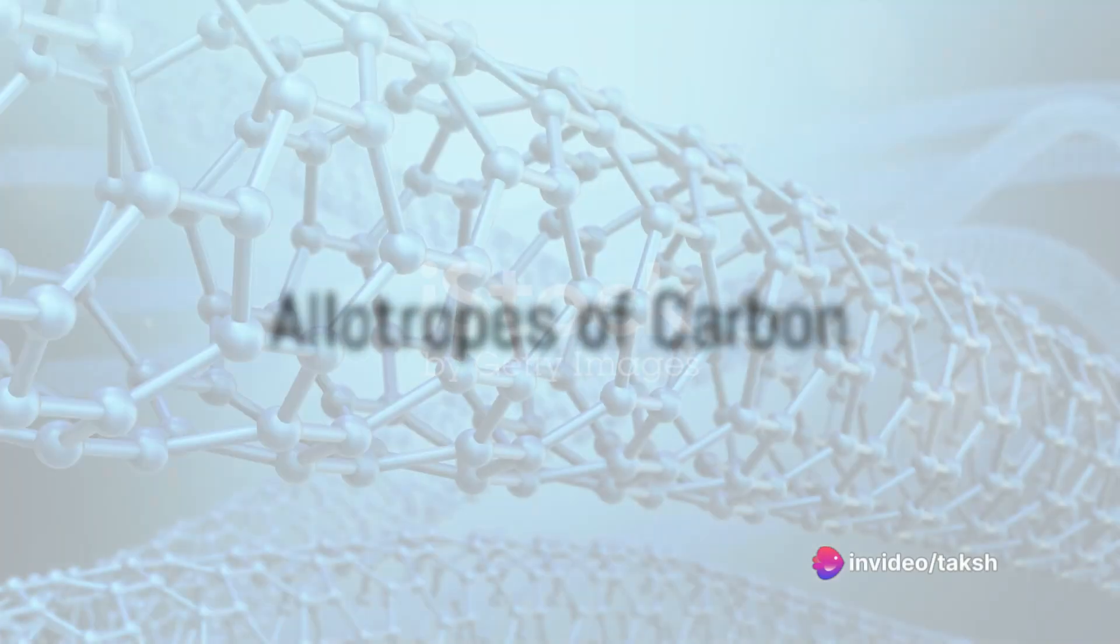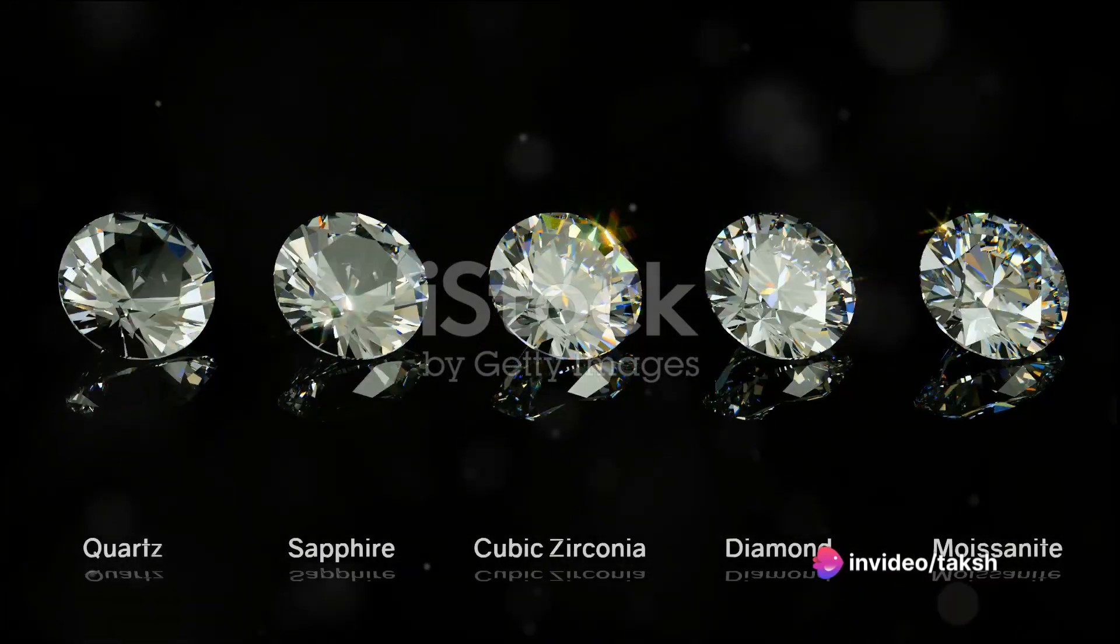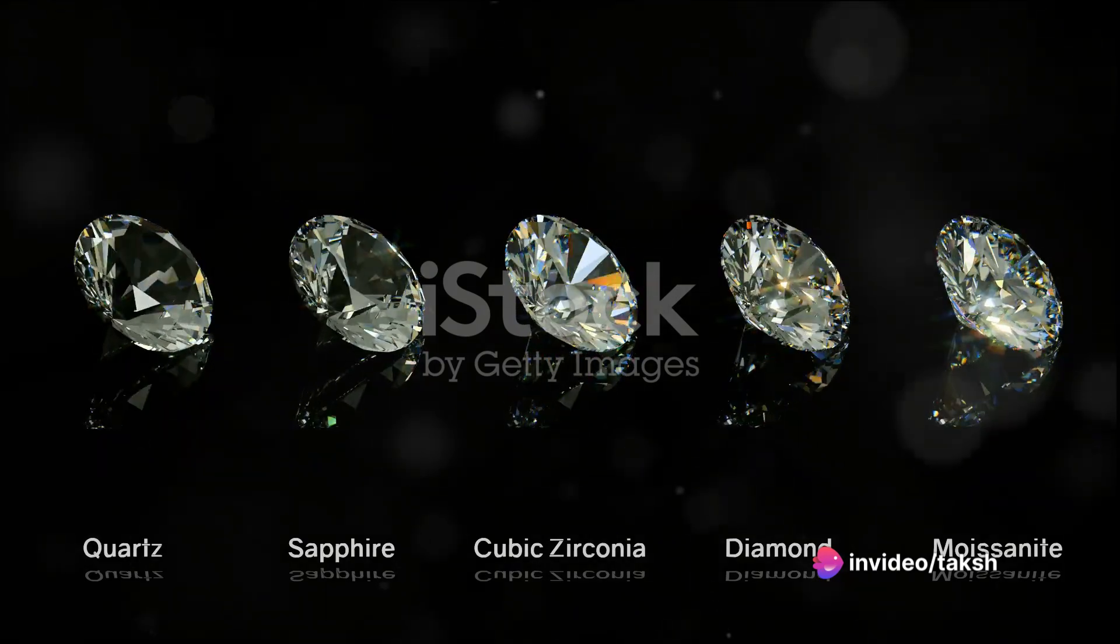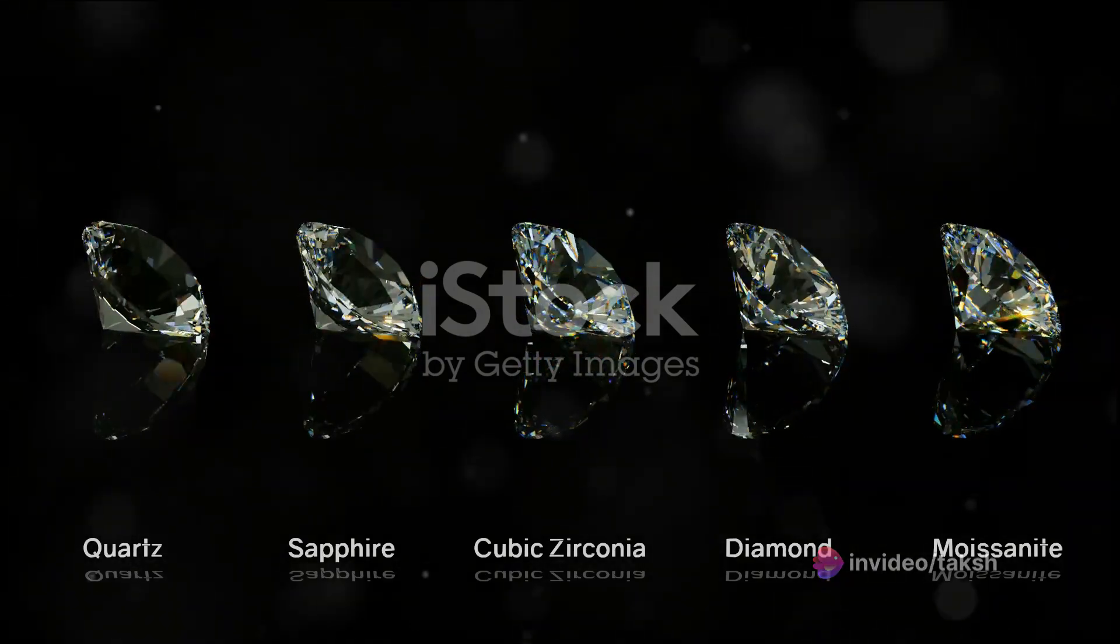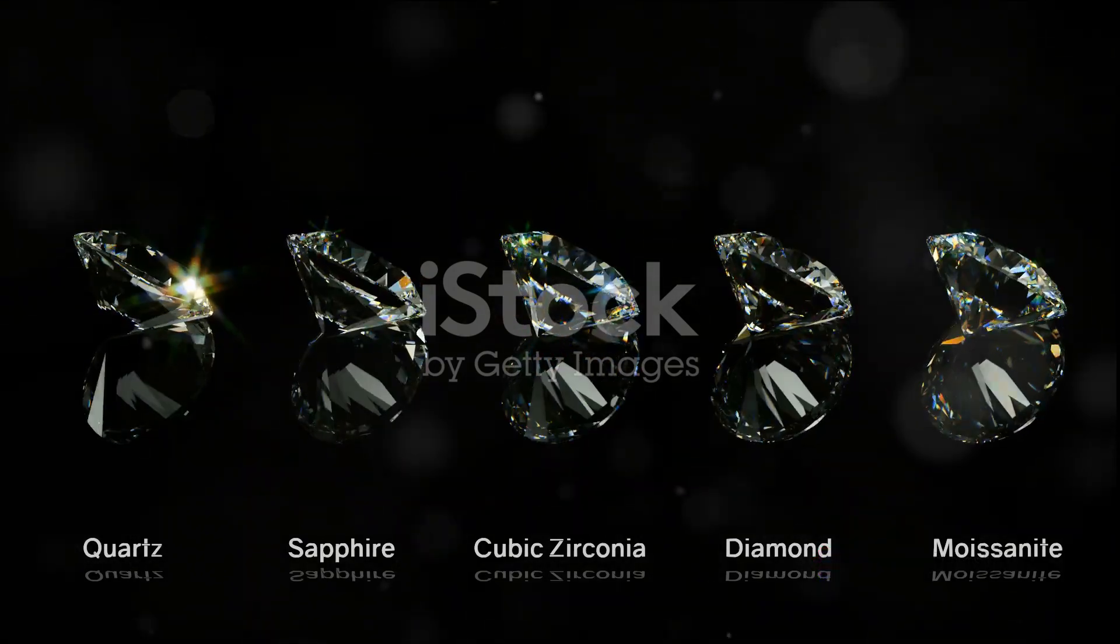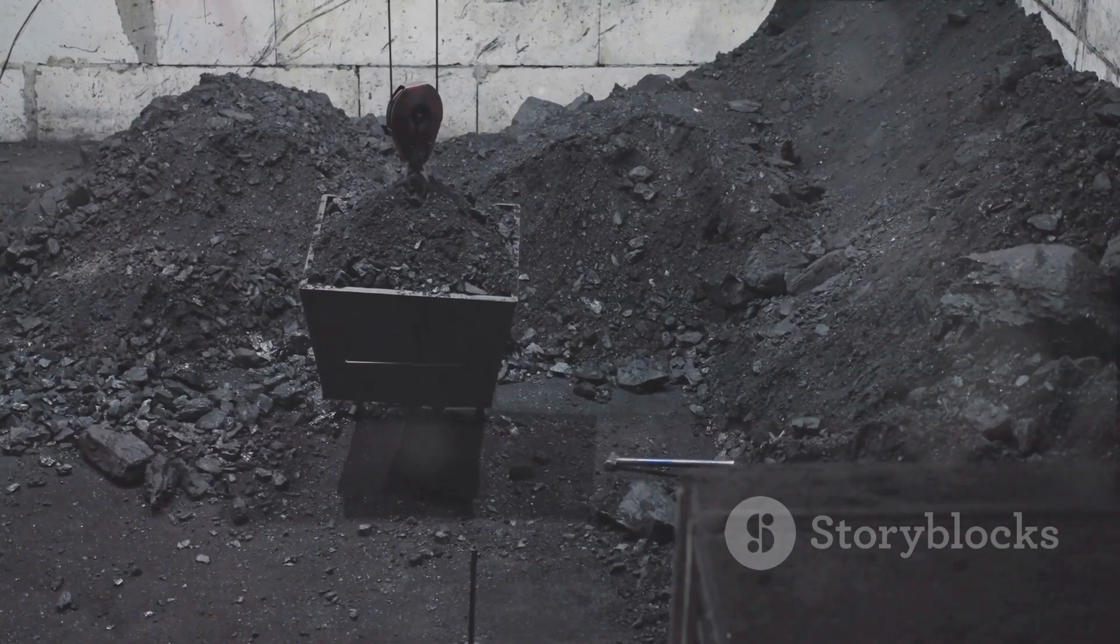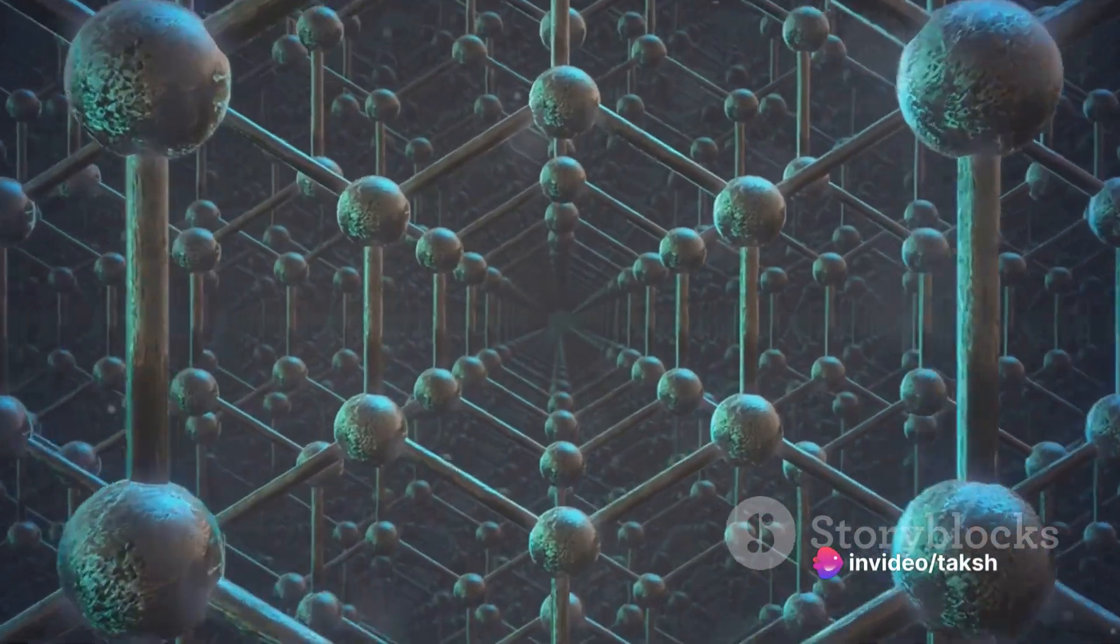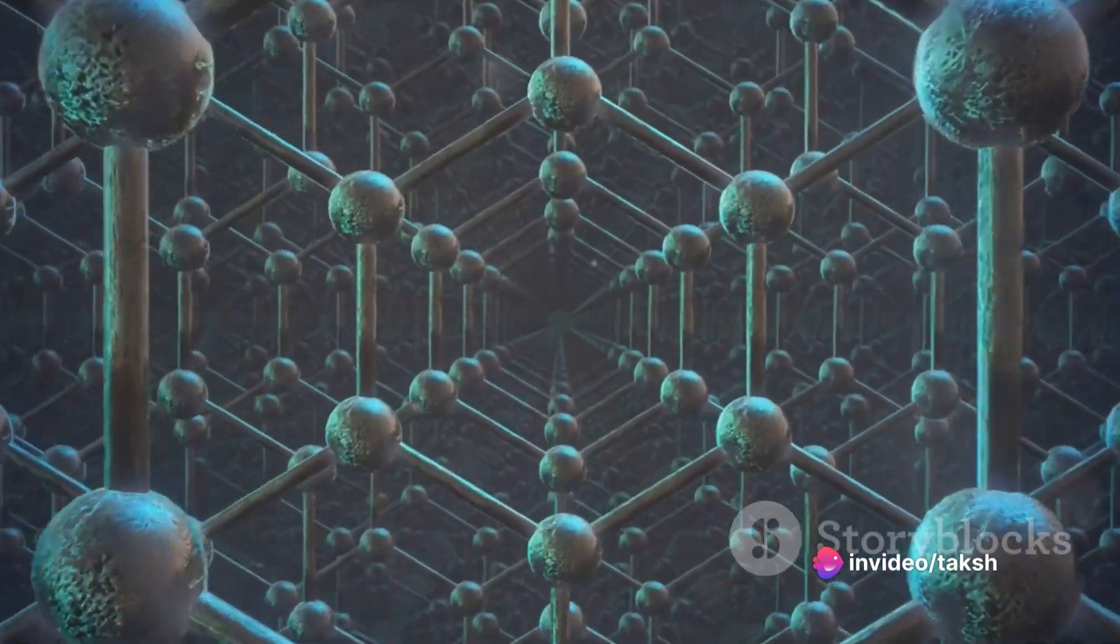And remember those diamonds, graphite and coal we mentioned earlier? They are all allotropes of carbon, different physical forms in which an element can exist. Diamonds are the hardest known natural material, graphite is used in pencils, and coal is a major source of fuel. All are made of carbon, but each has a unique structure that gives it distinctive properties.